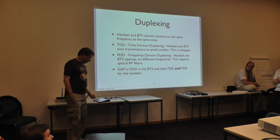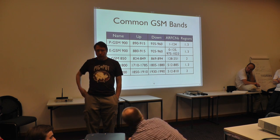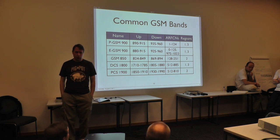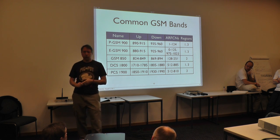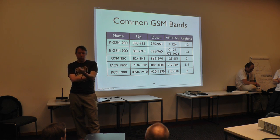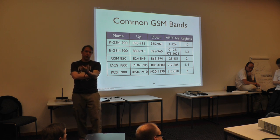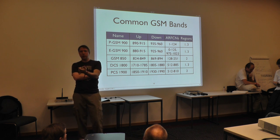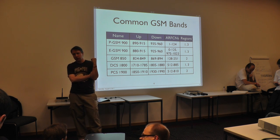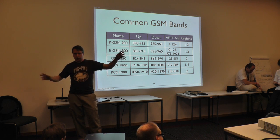Q: Does the time slot duration of 577 microseconds come from something mathematical? A: Yes, there's a numerology to the timing of GSM driven by two things. One is the vocoder frame length of 20 milliseconds — an integer number of vocoder frames must be transmittable in an integer number of time slots. The other is that all clocks in GSM are derived from a 13 MHz OCXO. The interaction of those two requirements generates the pattern of numbers you see.